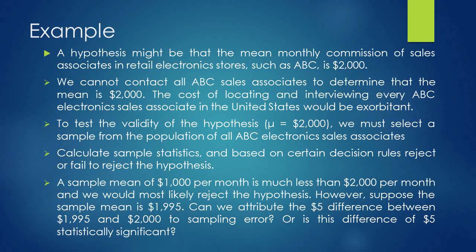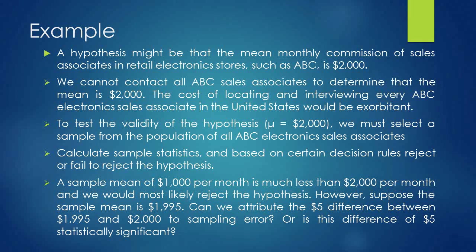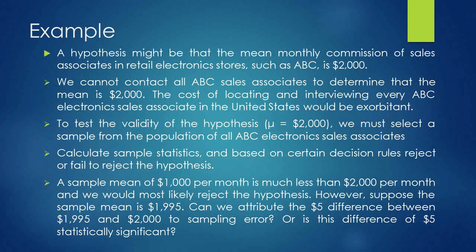Now suppose the sample mean is $1995. Can we attribute the $5 difference between $1995 and $2000 to sampling error? If our sample mean equals $1995 and our population mean equals $2000, the difference between the sample mean and population mean is $5. That is called sampling error — or is the $5 difference statistically significant?